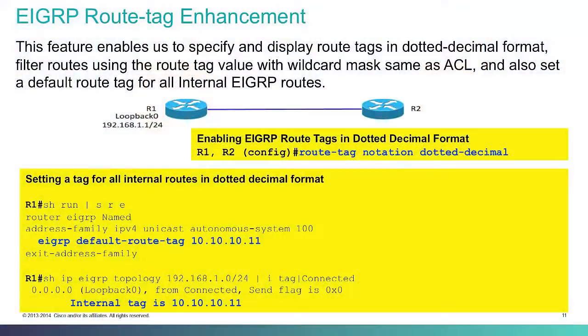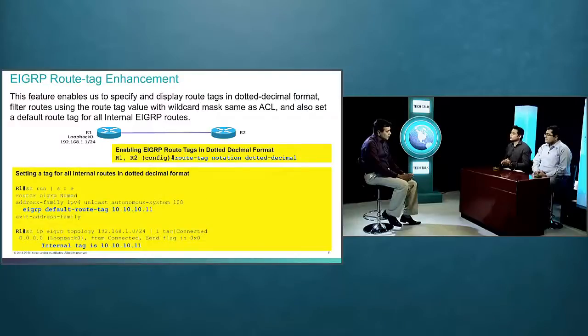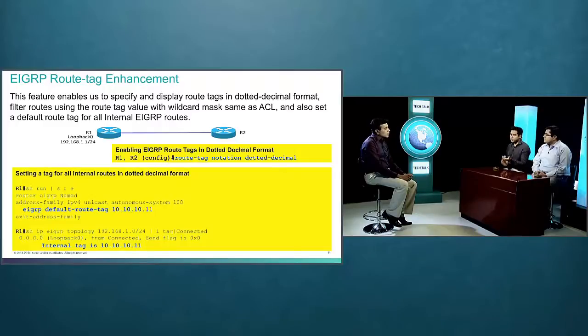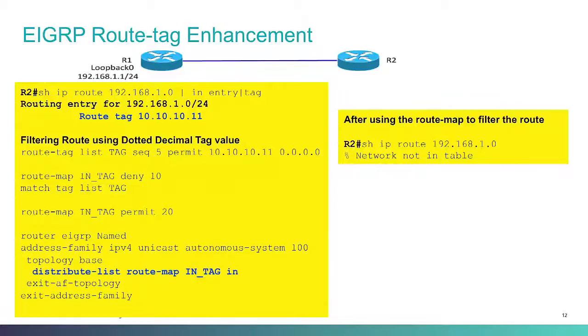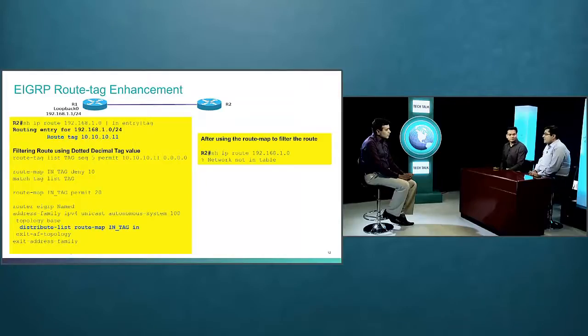Let's talk about route tag enhancements. This feature allows filtering routes based on tag values. What makes it new is the ability to declare route tags in a dotted decimal format, just like an IP address. The advantage is you can now use access lists to filter those routes based on the dotted decimal format. You can even use a wildcard mask to allow or deny a set of tag values. Customers can use tags in IP address notation and ACLs to filter or set the tag values, which makes life even easier.